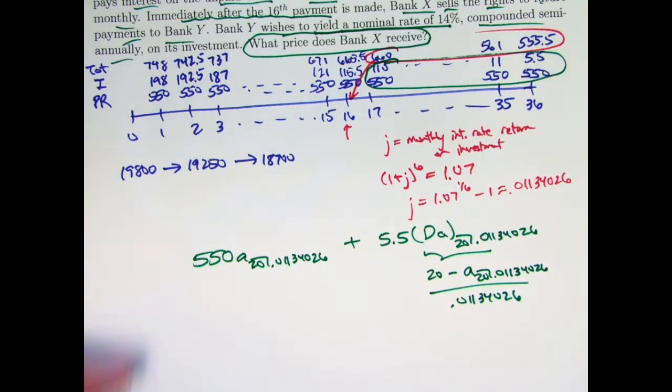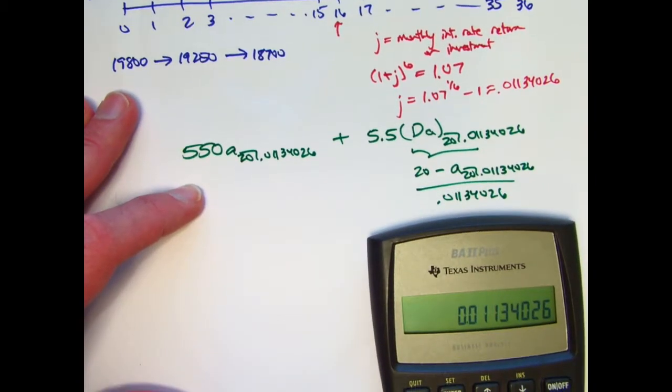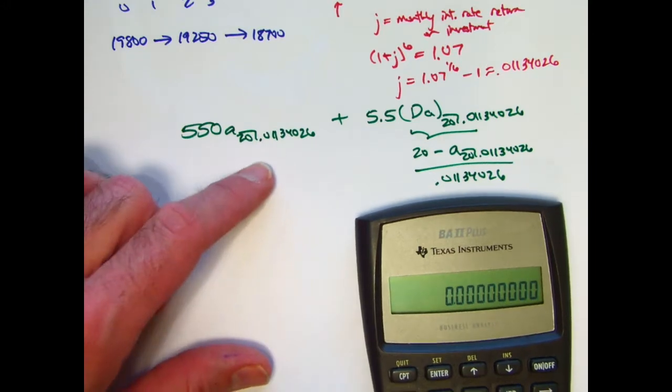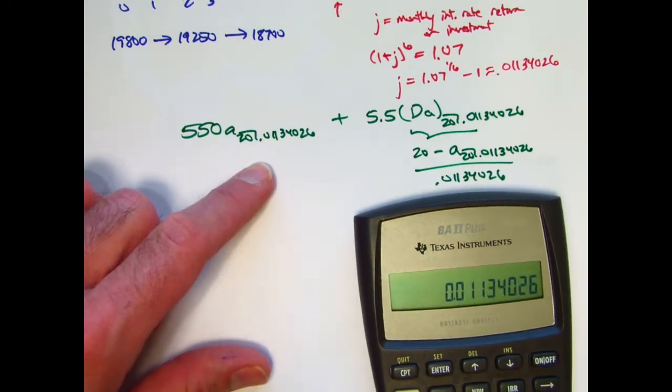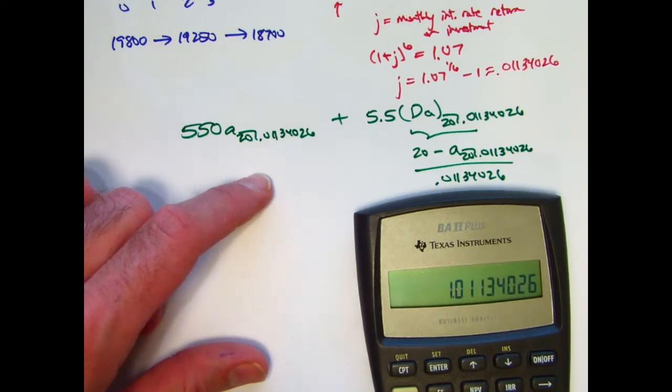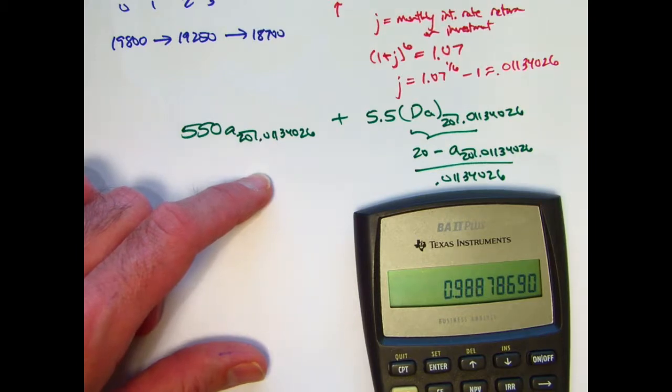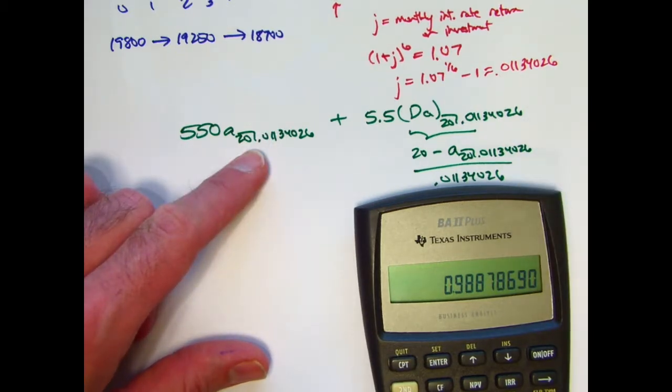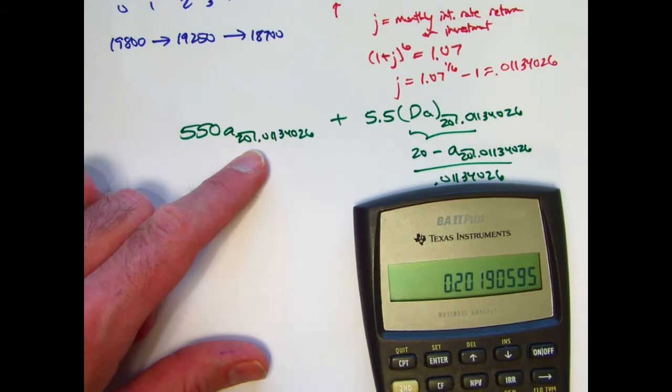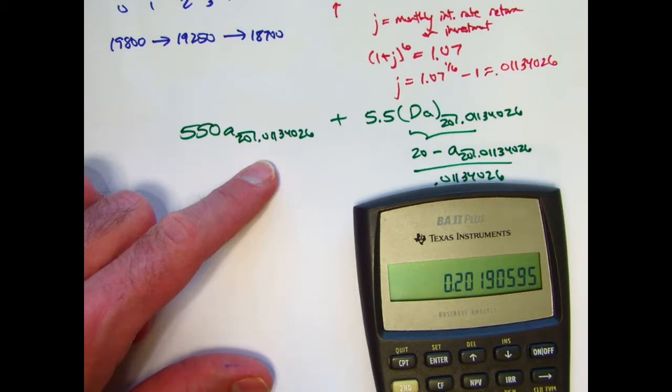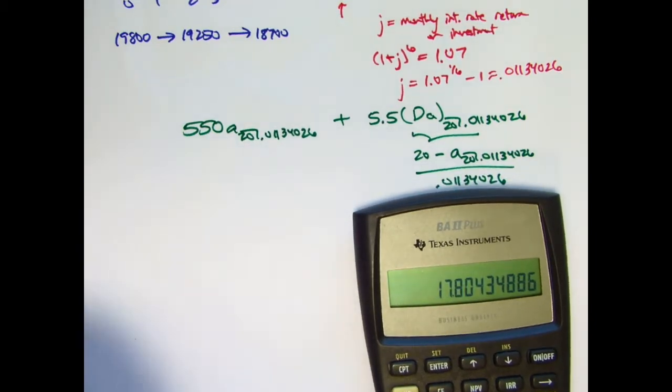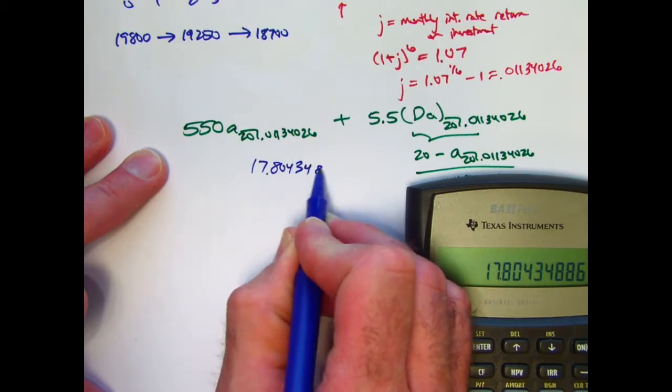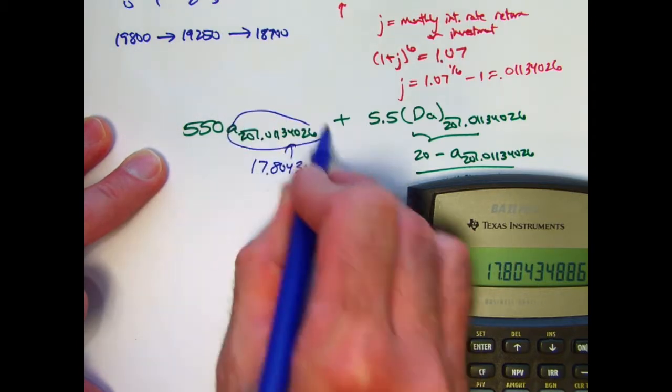And again, you should know the formula for the A's, the present values of level annuities, so well that you don't even have to write it down. All right. So I want to get the J in there, that's in register 0. There it is. I want to add 1 to it to find the 1 plus J. Then take its reciprocal to find the corresponding V, the discount factor, the monthly discount factor is this. That's got to be raised to the 20th power. I'm looking both here and here. Raise that to the 20th power. Subtract it from 1 and divide by that same monthly interest rate. Divide by what's in register 0. The value of the A is 17.80434886. That's this thing, and it's also this thing over here.